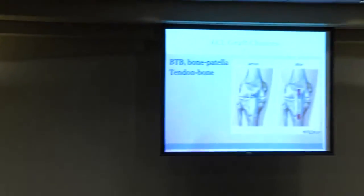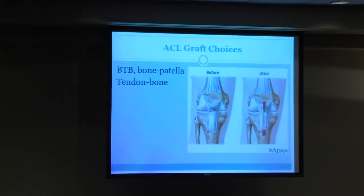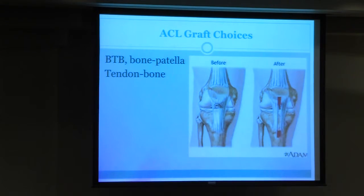Graft choices: I usually use bone-patellar tendon-bone. The patellar tendon is about three centimeters wide; I harvest a 10-millimeter strip, take a little piece of bone from the patella and a little piece from the tibia, and feed each bone plug into the tibial and femoral tunnels — those bones heal to bone and become the ACL. Correct — at part of the surgery I debride the old ACL stump.